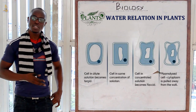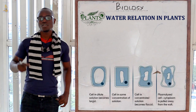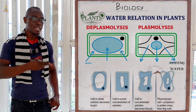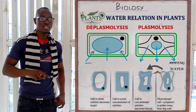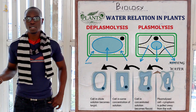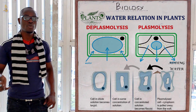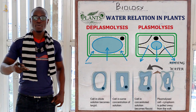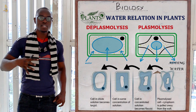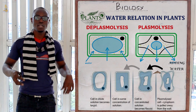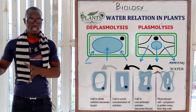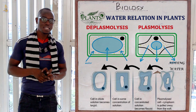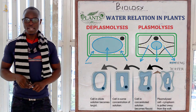The opposite of plasmolysis is deplasmolysis. Since plasmolysis involves losing water, when we add water back to the plant cell, the plant cell will gain water and return to the turgid state. This process is called deplasmolysis.